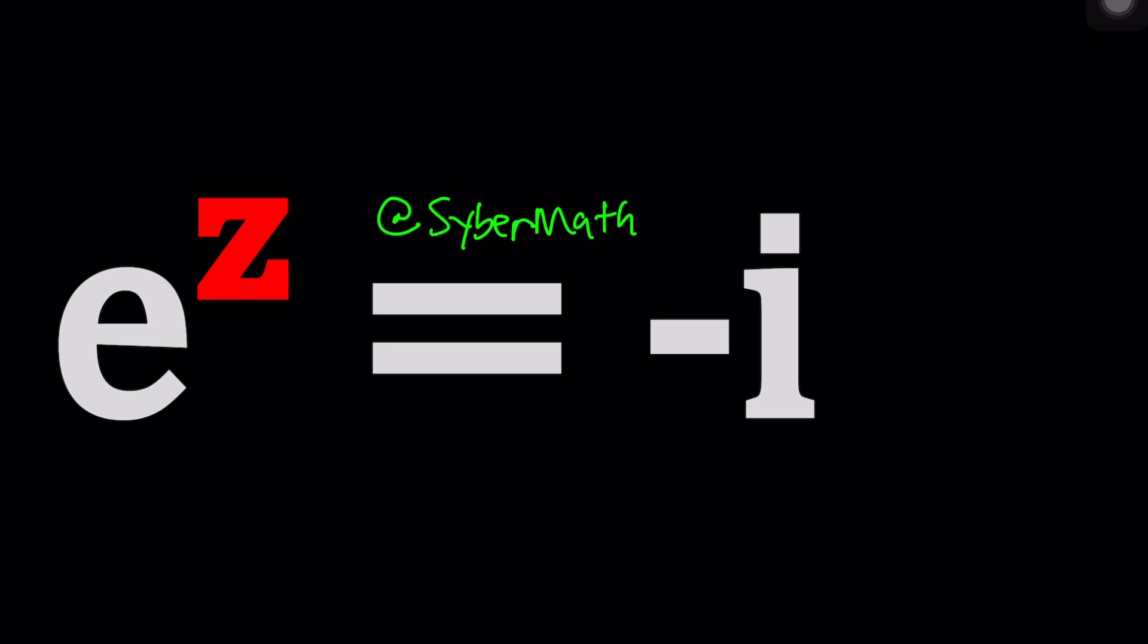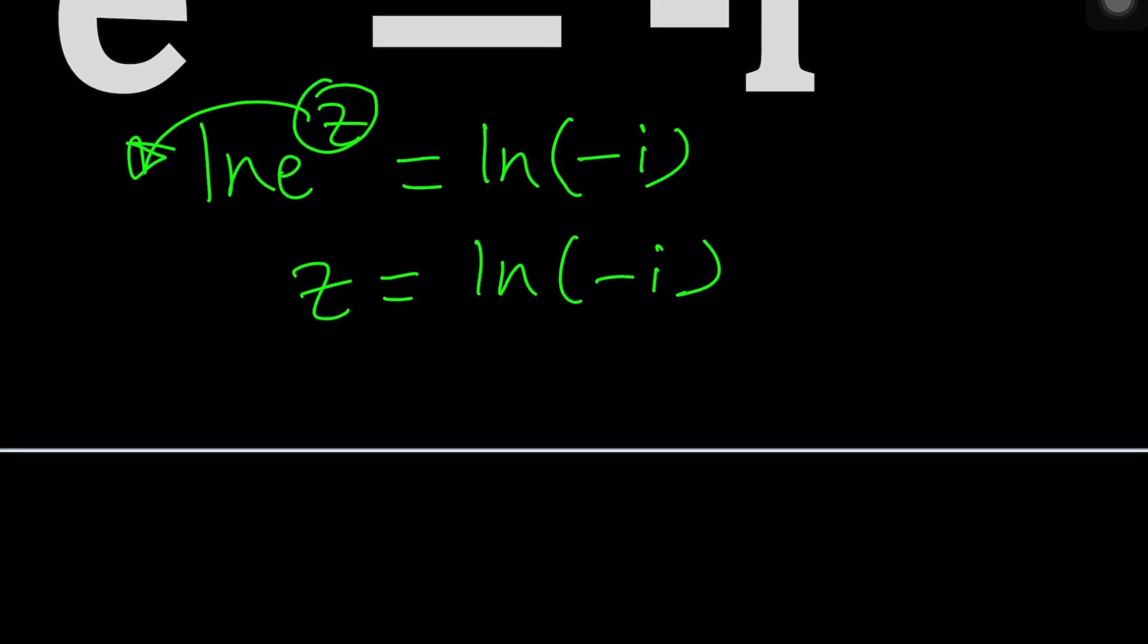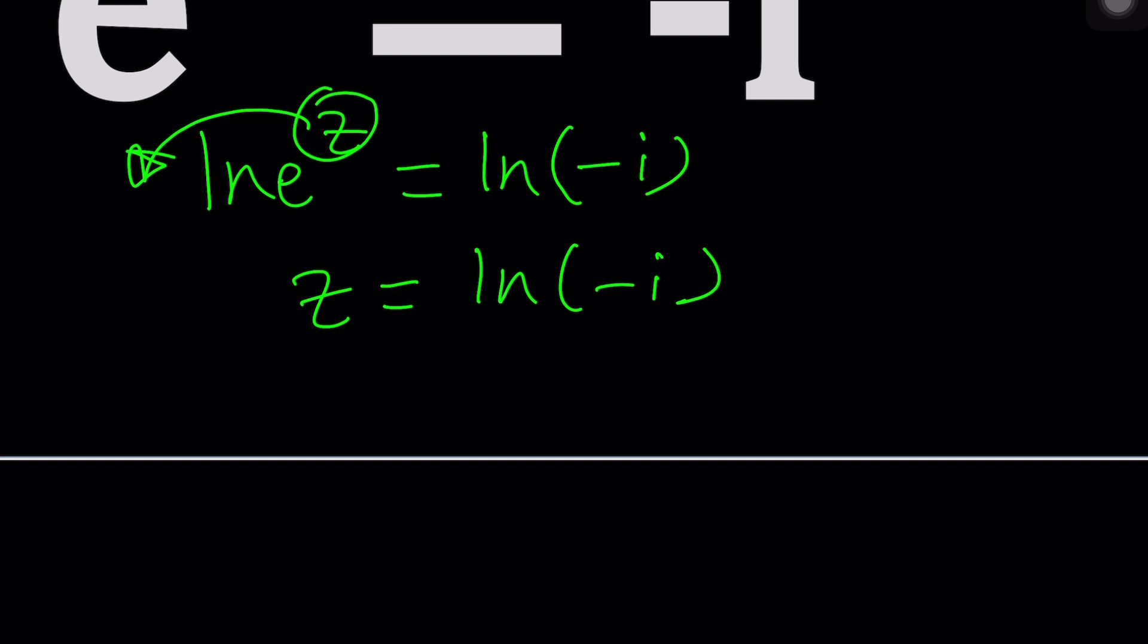So first of all I'm pretty sure that some people are thinking why don't you just ln both sides? What's ln? ln is the natural log. So as soon as you log both sides, ln e to the z is going to turn into z because ln e is one. So this will be z equals ln negative i. Case closed right? No not really. The problem is what is the natural log of a complex number? What's the natural log of an imaginary number? So those are things that we need to talk about.